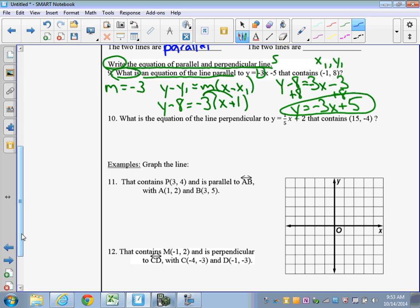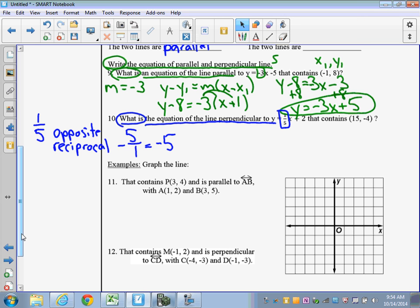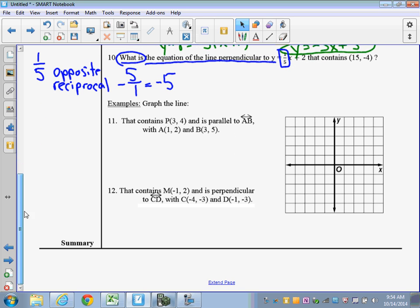I want you to do 10 on your own. Again, it's saying, what is the equation of the line perpendicular? And they give us this right here. So the slope is originally 1 over 5. So 1 over 5, the opposite reciprocal, we would flip it 5 over 1, and we put a negative sign out in front of it. So that's the same as negative 5. So that's going to be your slope for number 10, just to get you started. So again, do 10 on your own.